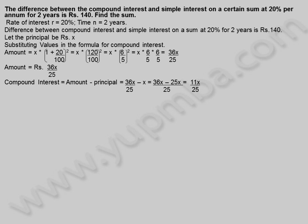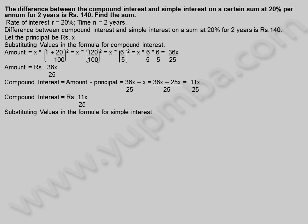Compound interest is equal to amount minus principle, which equals 36X by 25 minus X, giving 11X by 25. So compound interest is equal to 11X divided by 25 rupees. Substituting values in the formula for simple interest: simple interest equals X into 2 into 20 divided by 100, which equals 40X by 100 rupees.